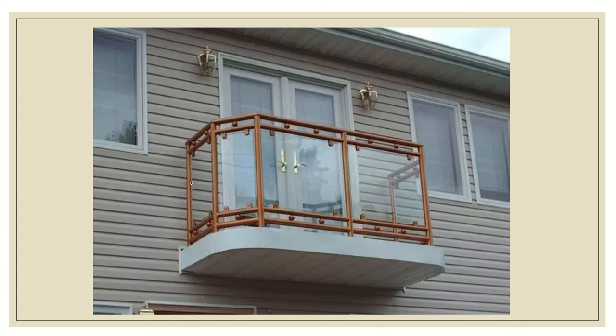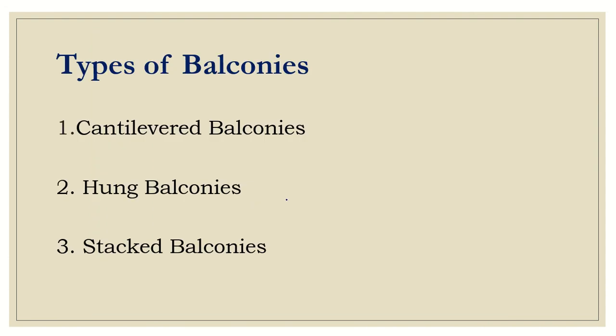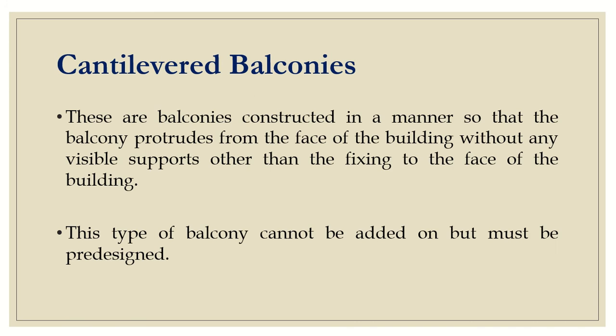You can see this diagram for a balcony — the brown color structure you see is the balustrade. Coming to the types of balconies, we generally have three types: the cantilevered balcony, the hung balcony, and the stacked balcony.